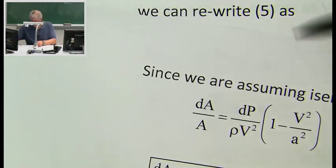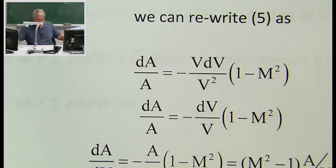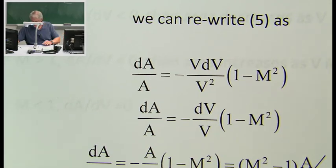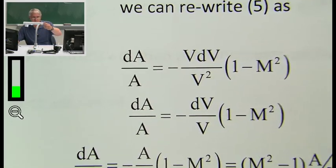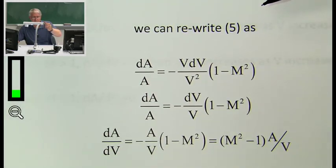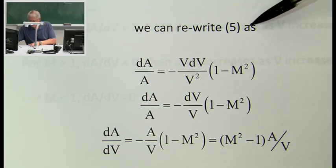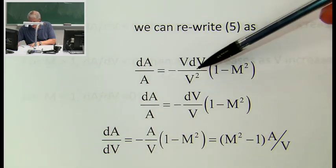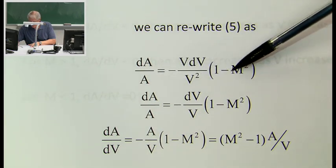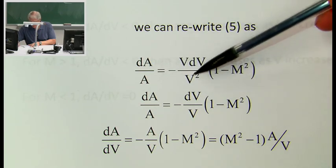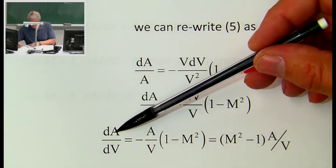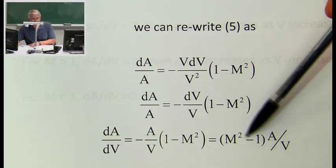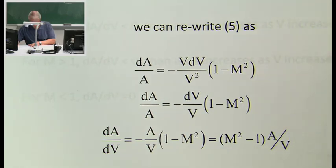Since dP/ρ = −V·dV, we can rewrite equation five as dA/A = −V·dV/V² · (1 − M²). Simplifying and rearranging: dA/dV = (M² − 1) · A/V.